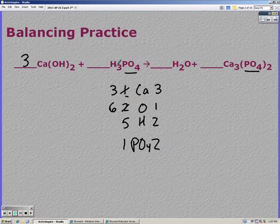So I have three calcium, six oxygen, and nine hydrogens. I also need to fix my phosphates so I can put a two there. That gives me six plus six which is 12 hydrogens.